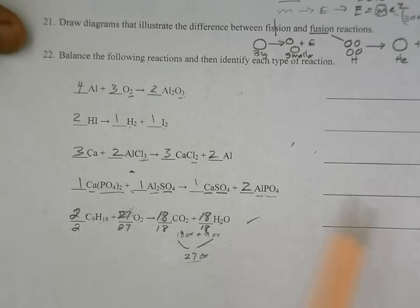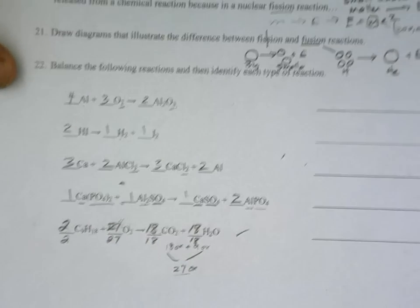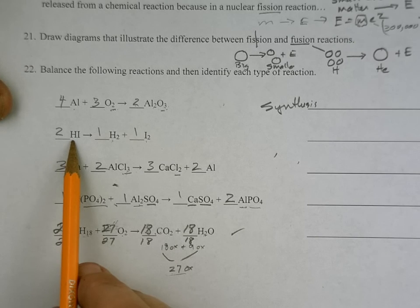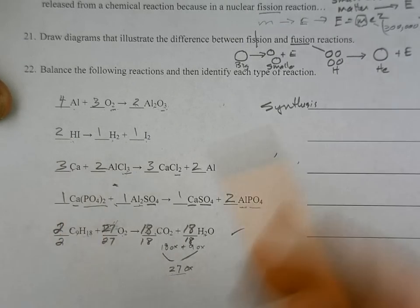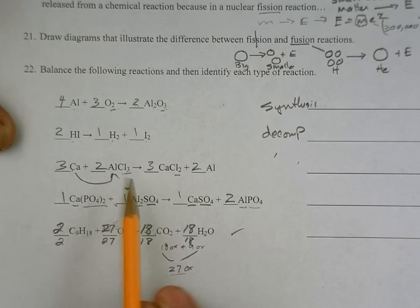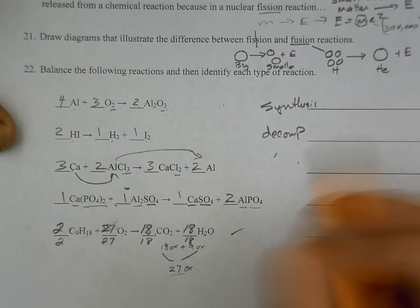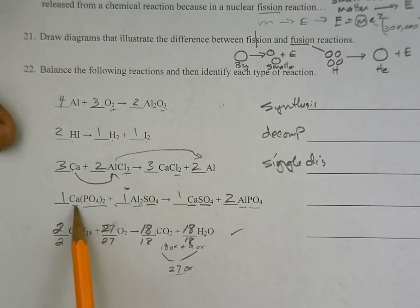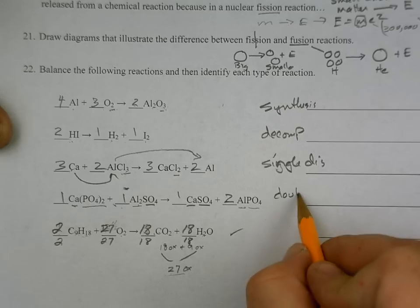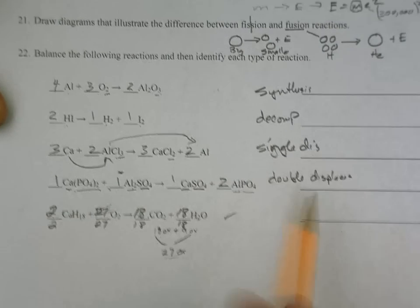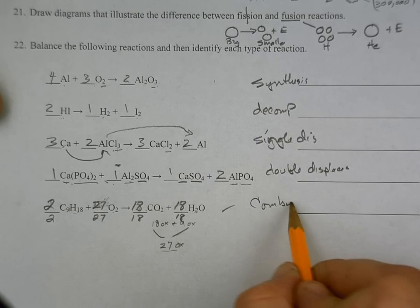And for types of reaction, over here, we're creating something bigger, so this will be synthesis. Over here, we're breaking down. We start with a bigger molecule, it gets smaller. This is decomposition. Over here, we get a single replacement. The calcium is kicking out the aluminum, making it over here all by itself. So that's going to be single displacement. Over here, we're going to have a double displacement, if we take a look, because the calcium and aluminum are switching partners. So this will be double displacement. My dance analogy, if these are dance couples, they switch partners. And this is combustion.